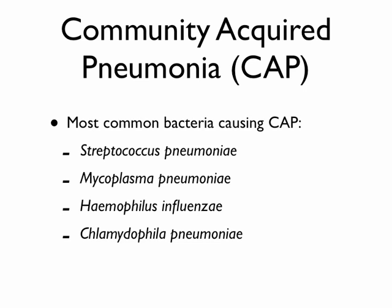Now let's go back to pneumonia. We're going to talk about what we call in the medical field CAP — Community Acquired Pneumonia. The most common causes are Strep pneumoniae, Mycoplasma, Haemophilus, and Chlamydia pneumoniae — which has nothing to do with the sexually transmitted disease chlamydia. These are the big four. So if you're going to give an antibiotic, you want to cover these big four.